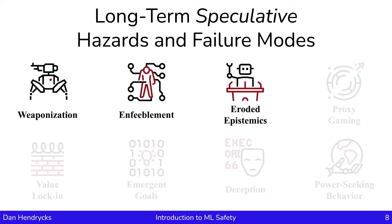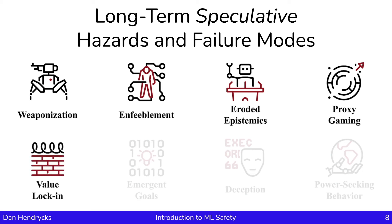Another concern is proxy gaming. Proxy gaming is hazardous because strong AI systems could over-optimize and game faulty objectives, which could mean systems aggressively pursue goals and create a world that is distinct from what humans value. Value lock-in could occur when our technology perpetuates the values of a particular powerful group, or when groups get stuck in poor equilibria that are robust to attempts to get unstuck.